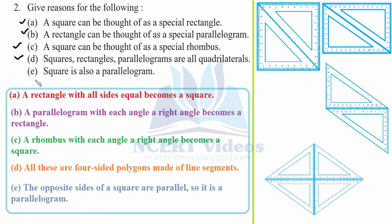Part E - a square is also a parallelogram. This is true because the opposite sides of a square are parallel, which satisfies the definition of a parallelogram. Similarly, a rectangle is also a parallelogram since its opposite sides are parallel. That completes question two.